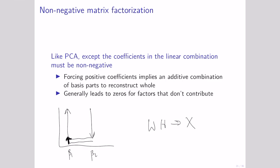Because we can only make things positive, things are only going to add together. So if a particular component doesn't matter for a value we have in X, we're not going to pay the cost of putting some value in when we add this together. In a non-negative form, we can only have positive numbers. So if we have a first component that contributes four, then the only thing we can have is zero in the next component to reconstruct the value. This is the effect that ends up forcing most of the values to be zero.